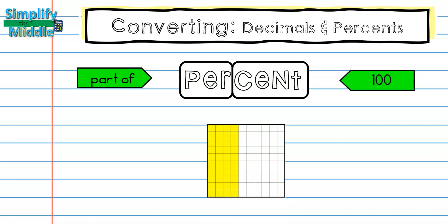Let's look at an example. Inside this grid, I have 10 by 10, which is 100 individual boxes. I can see here that I have four columns of 10 that are shaded. So what percent of this box is shaded? Well, if I know that I have 40 pieces that are shaded, it's simply 40%.